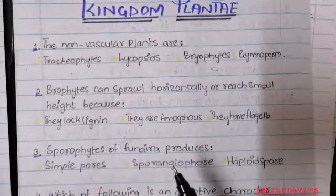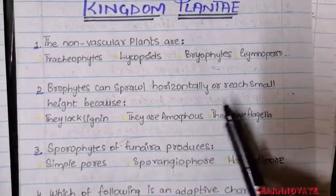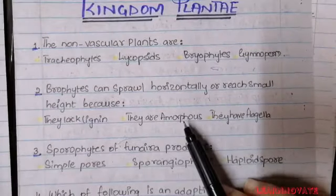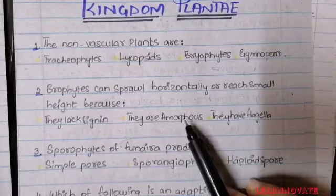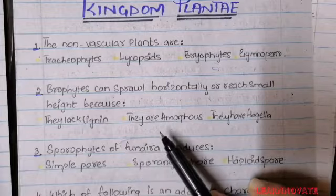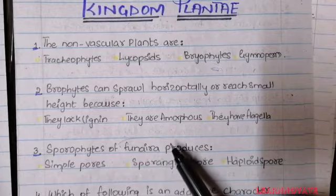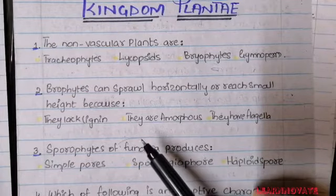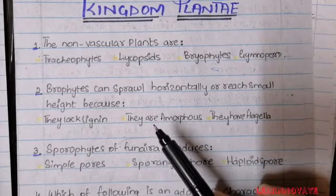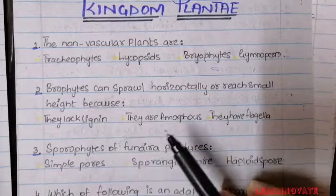Question 2 is also regarding bryophytes. It asks: bryophytes can sprawl horizontally or reach only a small height — why? A. They lack lignin, B. They are amorphous, C. They have flagella. It is a logical question: if the plant lacks lignin, it will not hold its shape or stay upright. So option A for question number 2 is correct — they lack lignin.